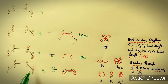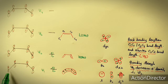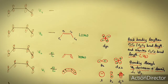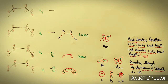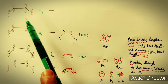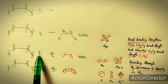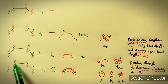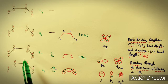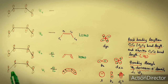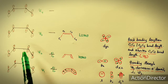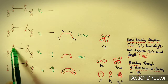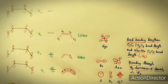Each p orbital has one electron, so butadiene has four pi electrons total. These four p orbitals combine linearly to form four molecular orbitals: psi 1, psi 2, psi 3, and psi 4. Psi 1 has all lobes on the same side — no nodes — so it is a bonding orbital of lowest energy. Psi 2 has one node and is the second bonding orbital.